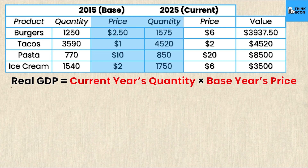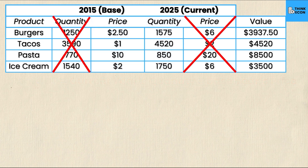Note that in this calculation you don't use the base year's quantity or the current year's prices — all you're concerned with is the base year price and the current year quantity. The other columns are completely useless for this particular calculation, though they are useful in other calculations.